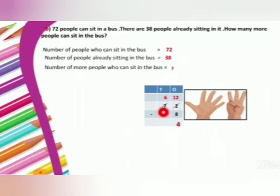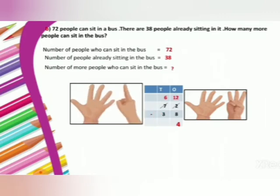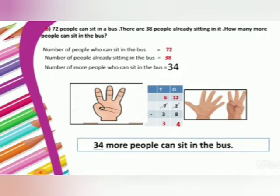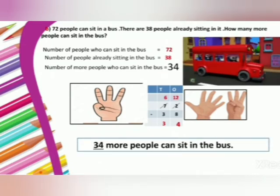Now let's move to the tens column. 6 minus 3 — open your 6 fingers. How many fingers do you have to close? 3. Close your 3 fingers. How many are left? 3 fingers. So 6 minus 3, your answer is 3. So number of people who can sit in the bus — the answer is 34. 34 more people can sit in the bus.